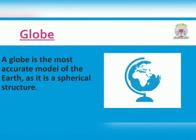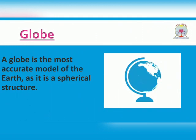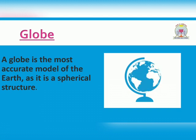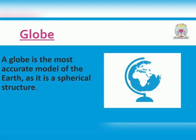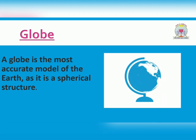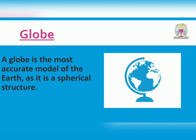Let us discuss about the globe. What is a globe? A globe is the most accurate model of the Earth as it is a spherical structure. The globe gives us a true representation of different places located on the Earth. A globe shows the Earth's five oceans, seven continents and different countries.